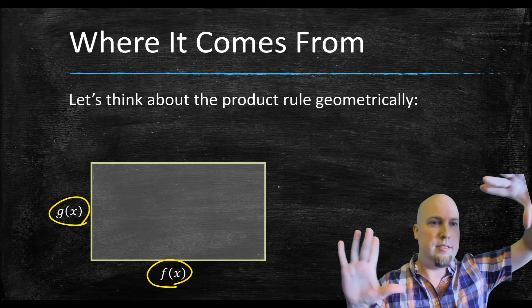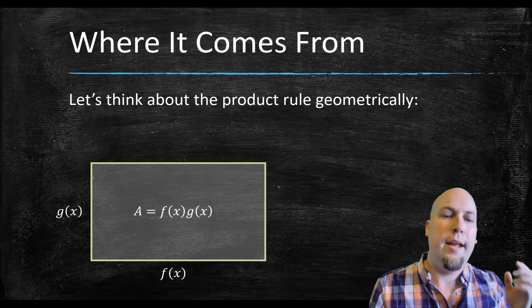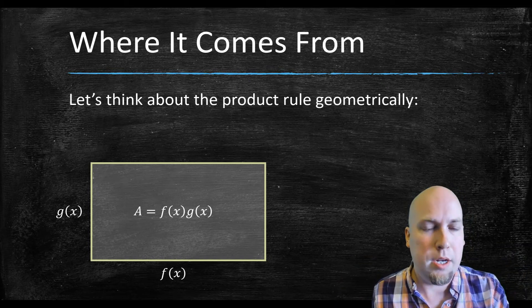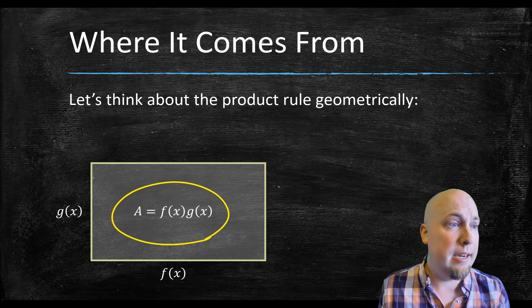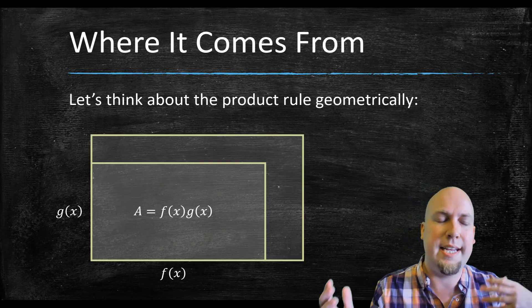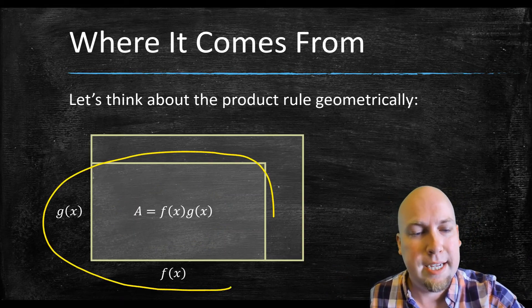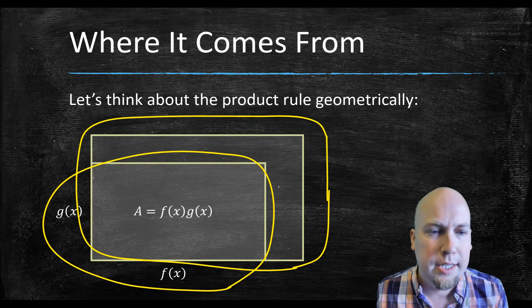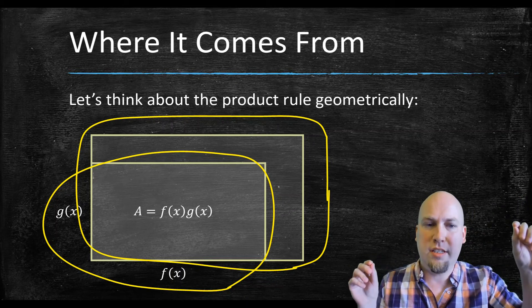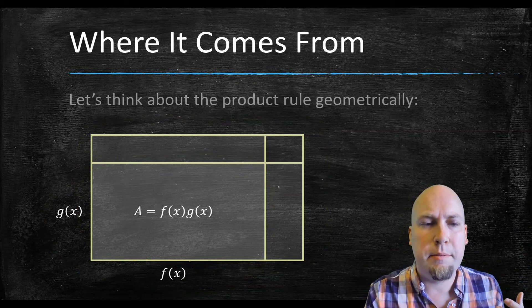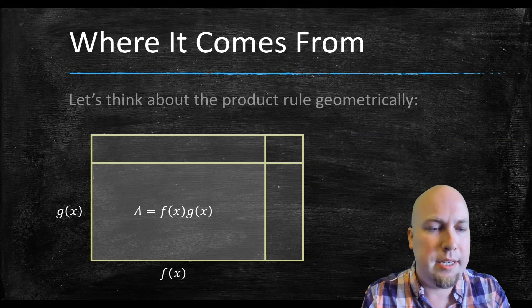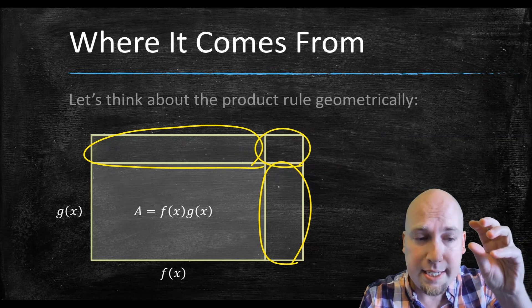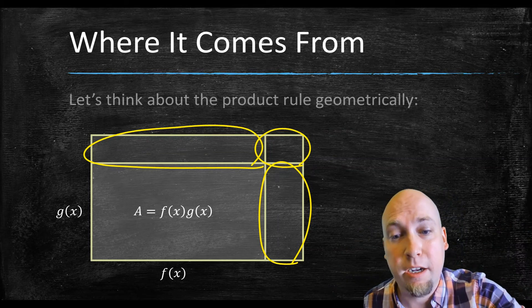The question is: what's the rate of change of that area? I'll draw a second, bigger rectangle representing time x plus h — after the input has changed by just a little bit. I've added a couple of extra lines to split the change in area into three separate pieces, and I'll tackle those three areas one at a time and add up the answers to find the overall rate of change.